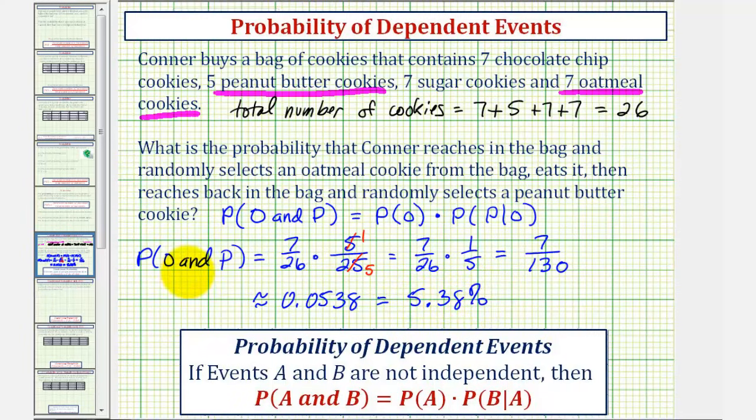But we should keep in mind that the exact probability would be this fractional value, and these two are approximations. I hope you found this helpful.